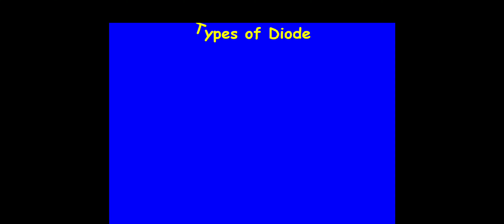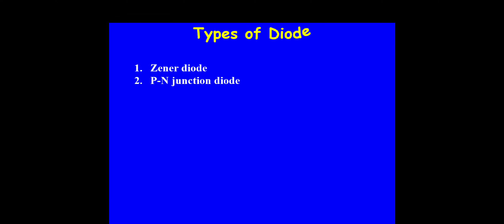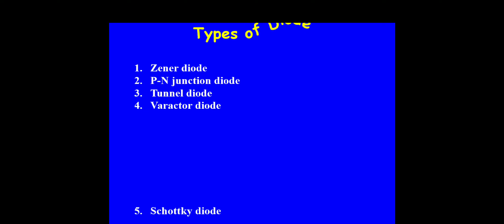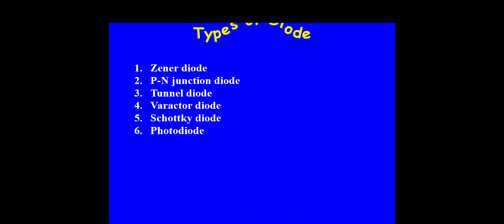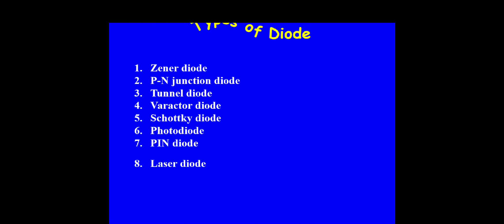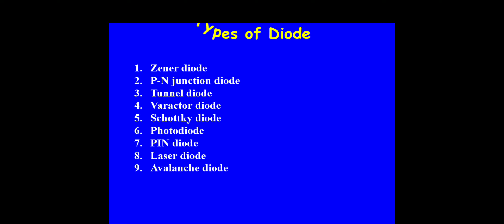The types of diodes include: Zener diode, PN junction diode, tunnel diode, varactor diode, Schottky diode, photodiode, PIN diode, laser diode, avalanche diode, and light emitting diode (LED).